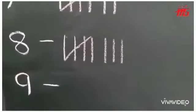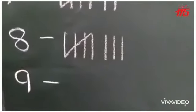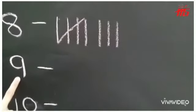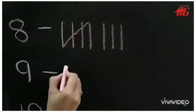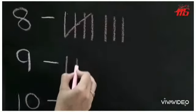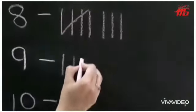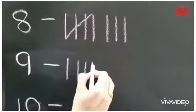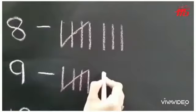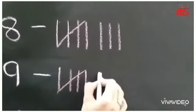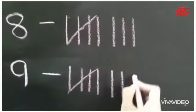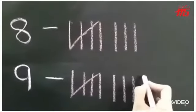Now let us draw the tally marks for number 9. Come on. 1, 2, 3, 4 — number 5 shuts the door. Again, leave a little space. 6, 7, 8, 9.